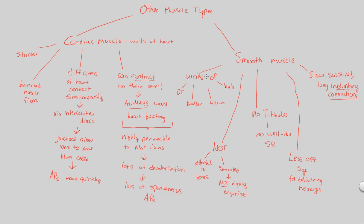That covers our look at the other muscle types. We are done with muscle in this lecture and will conclude in the next two or three flowcharts at the other half — musculoskeletal. Now we'll look at the skeleton in the next couple of flowcharts.